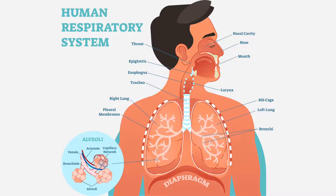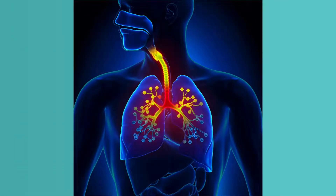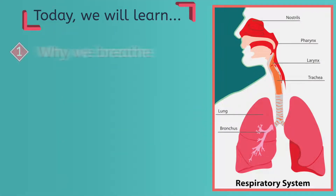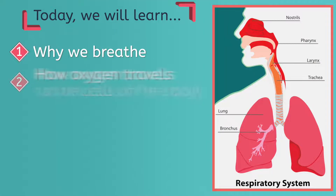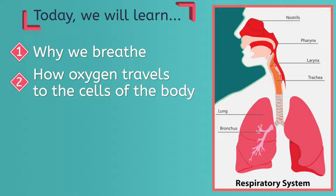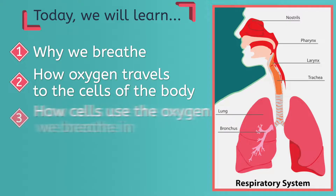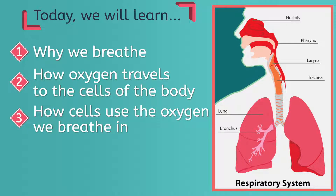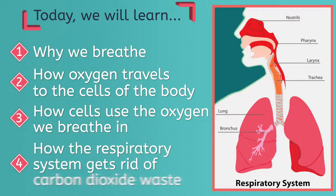In future lessons, we'll unpack other human organ systems. The respiratory system involves our breathing and makes the oxygen we breathe available to our whole body. Today, we will learn why we breathe, how oxygen travels to the cells of the body, how cells use the oxygen we breathe in, and how the respiratory system gets rid of carbon dioxide waste.